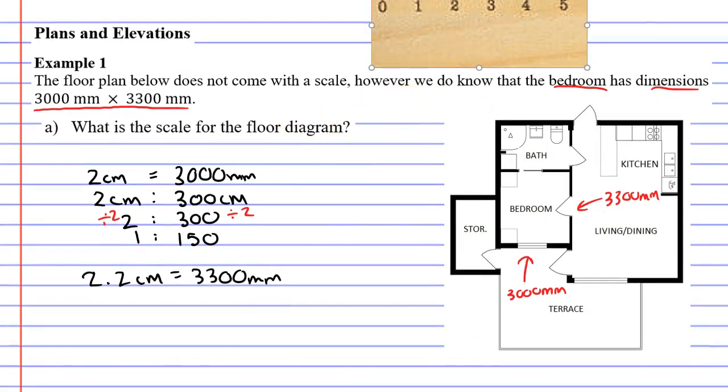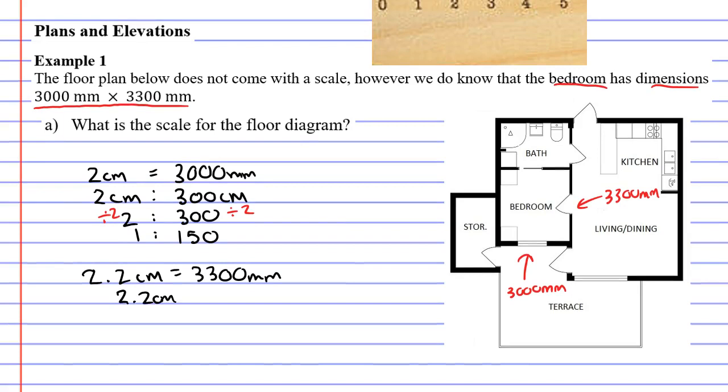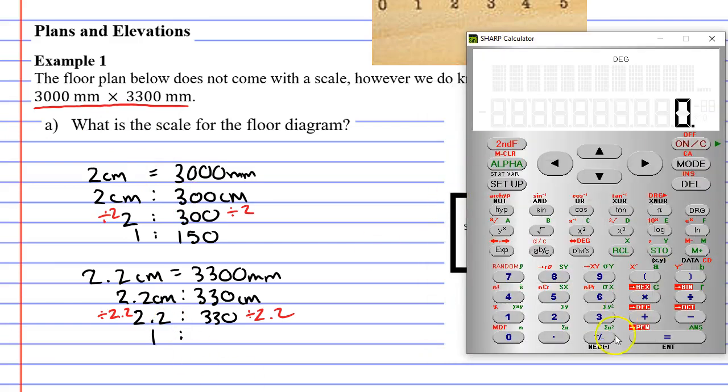If we follow the same process with our other measurements we should get the same scale. We've got 2.2 centimeters which is equivalent to 330 centimeters. Now that they're in the same units we can write 2.2 to 330. I'm going to divide both sides by 2.2, which gives us 1 to 150.